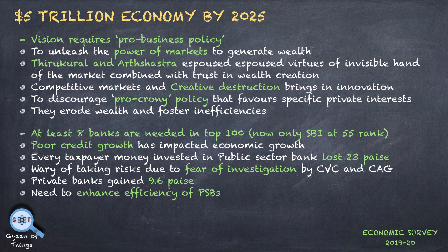A well-functioning financial market is required. India needs large banks that rank among the top 100 banks in the world — currently only SBI is ranked 55th. This will boost credit availability. India's banking sector is dominated by public sector banks, which are inefficient. For every 1 rupee invested in public sector banks, there has been a loss of 23 paise, whereas private banks gained 9.6 paise. Therefore, public sector banks need to be made more efficient.